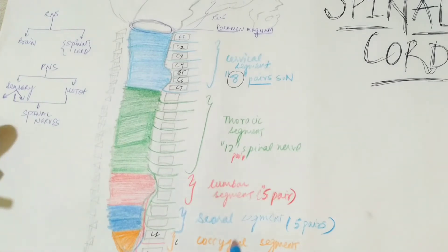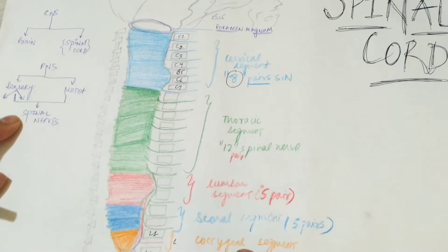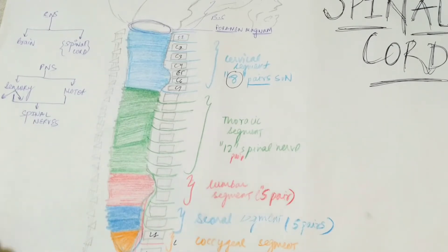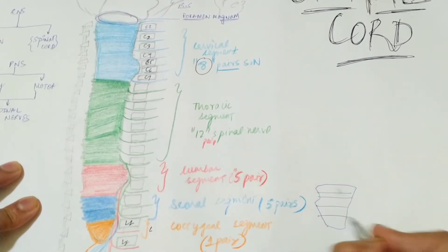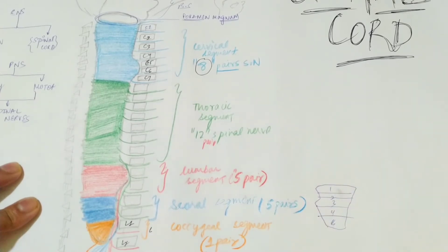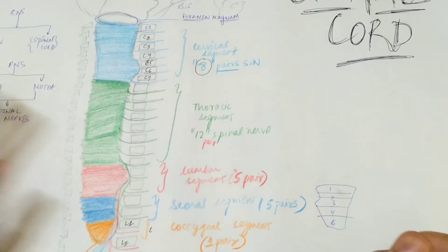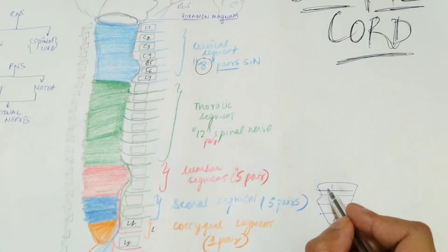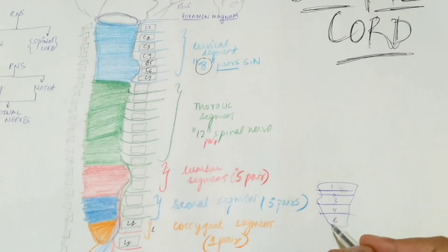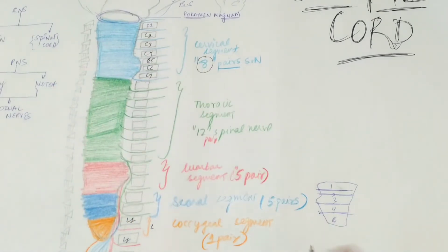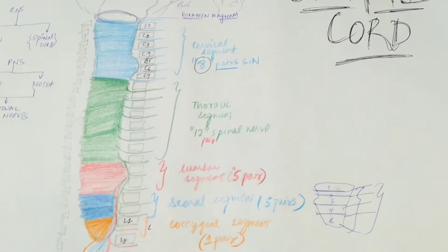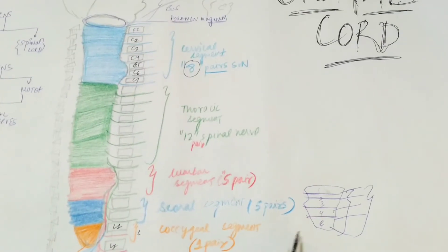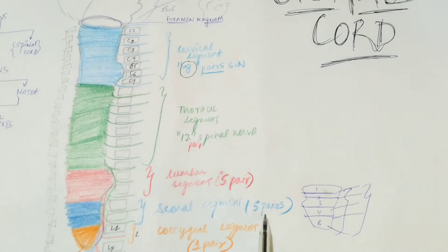A special point about the sacral segment: although the sacrum is one bone today, during embryological development it had five separate segments. After the embryonic stage, these fused into the single sacrum bone — which is why you see transverse lines on the sacrum. That is why there are five pairs of spinal nerves from the sacral segment. Total: 8 + 12 + 5 + 5 + 1 = 31 pairs of spinal nerves.